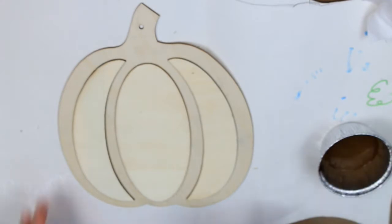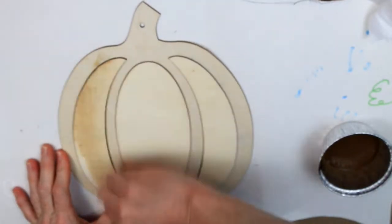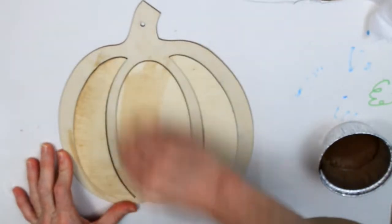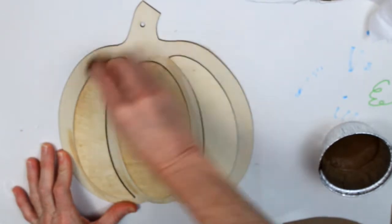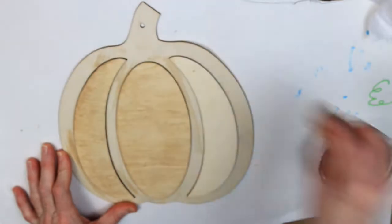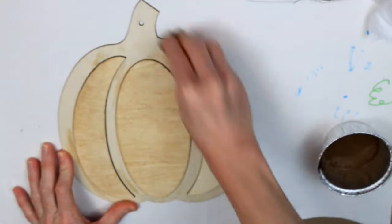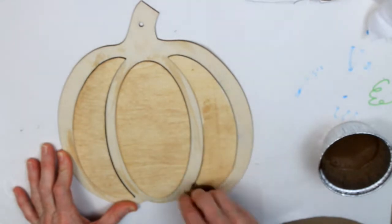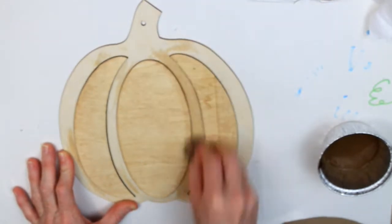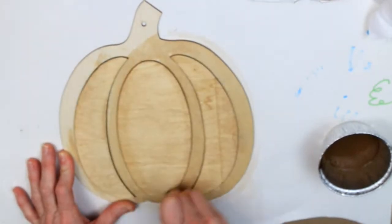First off I'm just going to stain this pumpkin. I've used some Waverly antique wax and watered that down, makes a really good stain and it's not stinky and it's easy to clean up. Just using a facial wipe, dipping that in there, squeezing it out, and going to go over all the parts of this pumpkin.